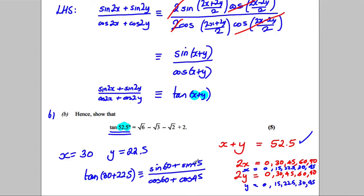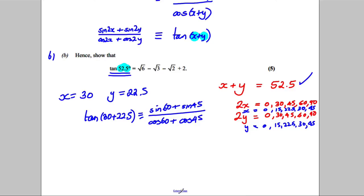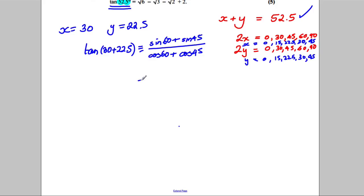Now each of these are values of sine and cosine that I should know. So sine of 60 is root 3 over 2, so this would be root 3 divided by 2. Sine of 45 is root 2 over 2, and all of that divided by cos 60 is a half and cos 45 is also root 2 over 2.